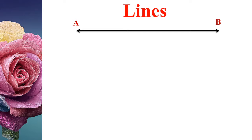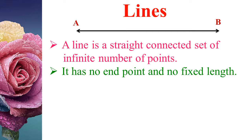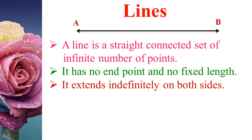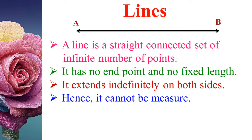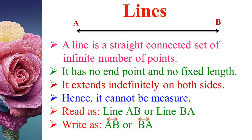Now let us learn what is a line. A line is a straight connected set of an infinite number of points. It has no end point and no fixed length, so it extends indefinitely on both sides. Hence, it cannot be measured. Here we have line AB. This line AB has no end point and no fixed length. We can read it as line AB or line BA, and we write it as AB or BA with the symbol of the line above the letters.